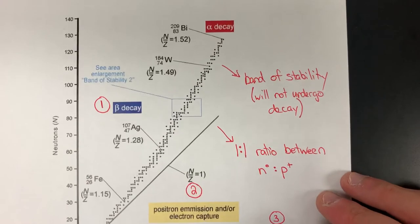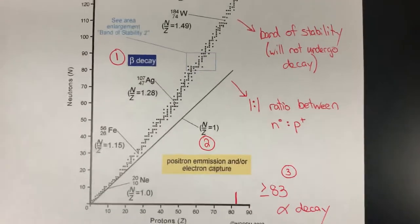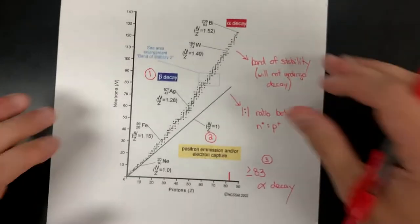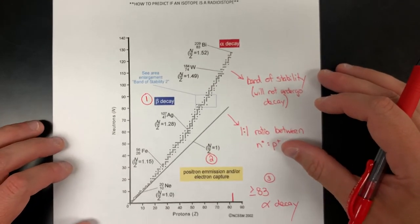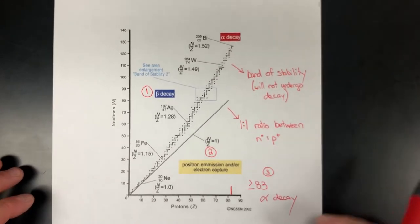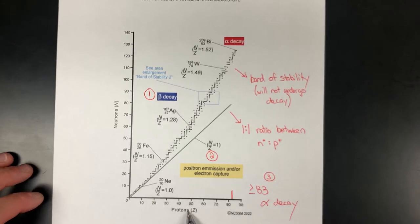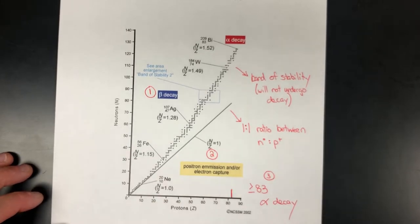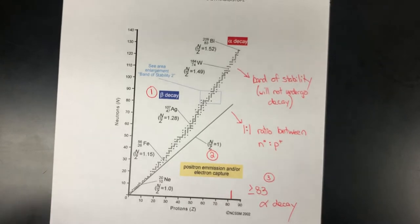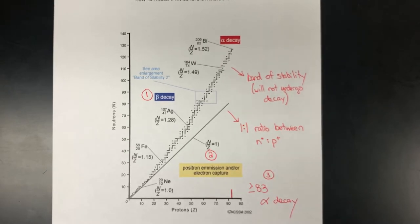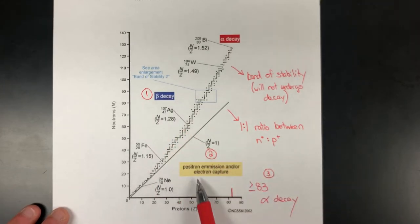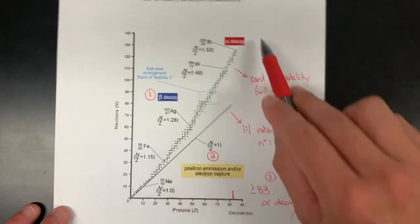Here is a copy of the band of stability. It's basically just a graph. We're graphing protons on the x-axis versus neutrons on the y-axis. If we're studying an atom, some isotope of an element, and if we know the number of protons and neutrons, we can determine whether the isotope is stable. And if it is not stable, we can determine whether it would undergo beta, positron, or alpha decay.